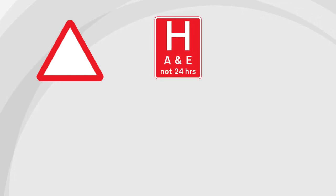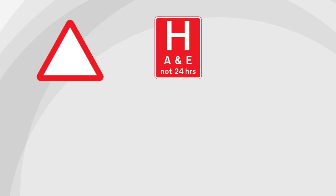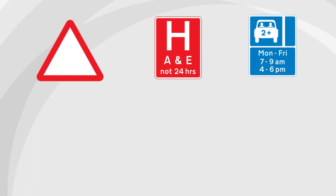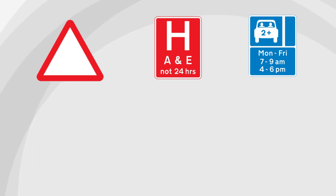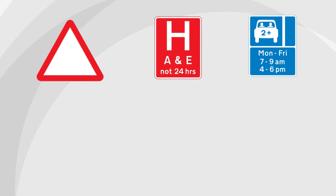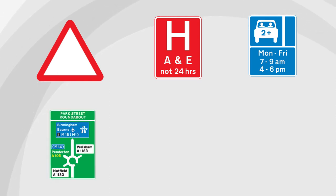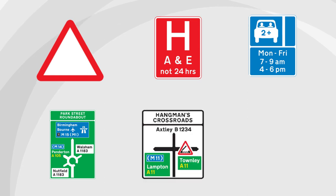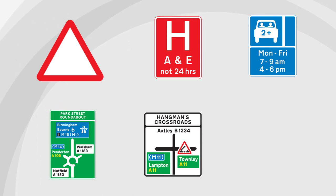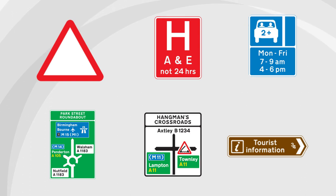Square or rectangular signs provide the motorist with information. This sign with a H on it indicates that there is a hospital with an A&E, however, which is not open 24 hours. This rectangular blue sign provides information that this particular lane is only for vehicles carrying two or more people, and gives the timings when the lane is in force. Directional signs with a green background and white border indicate a primary route, whereas a white background with a black border is used for local non-primary routes. Brown rectangular signs provide information for tourists.